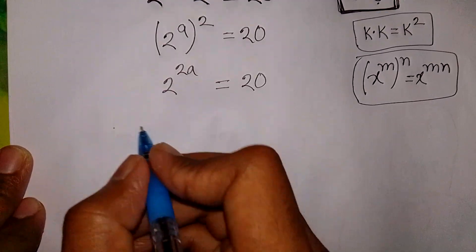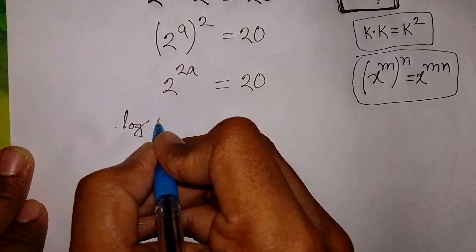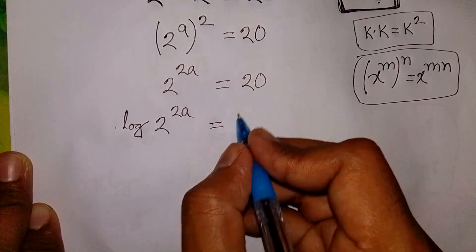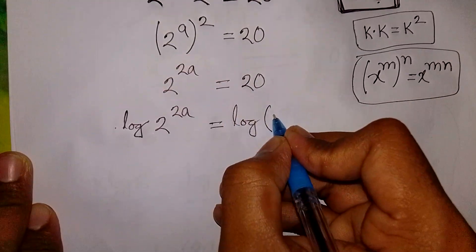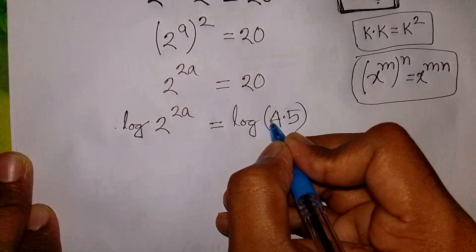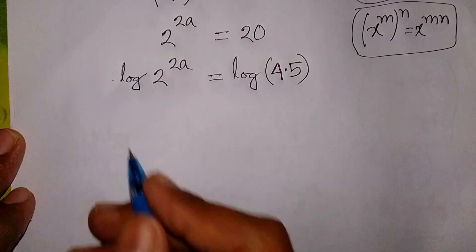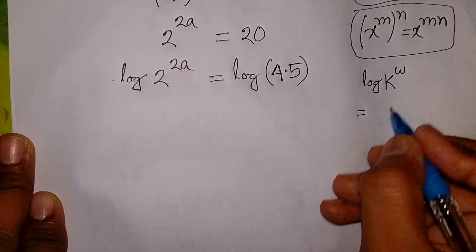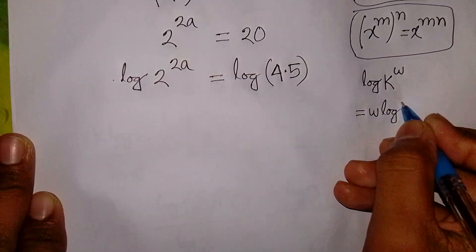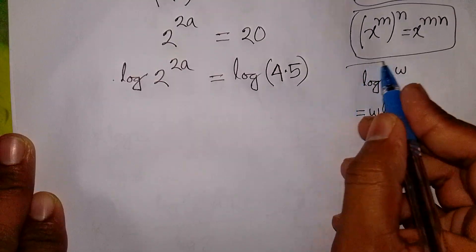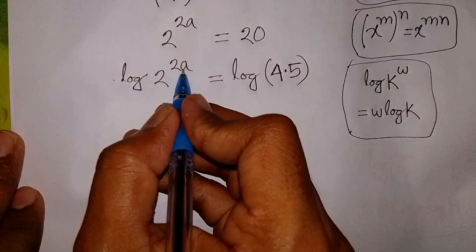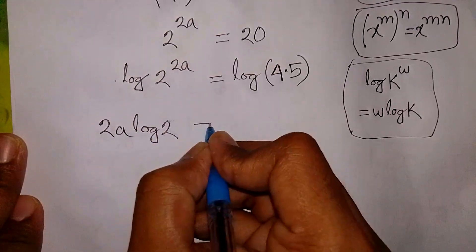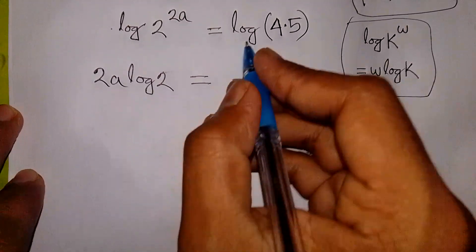Now we apply log to both sides. Log of 2 power 2A is equal to log of 20, which can be written as log of 4 times 5. We apply the rule: log K power W is equal to W log K — this power W moves to the front. So 2A into log 2 is equal to log of 4 times 5.